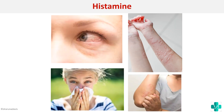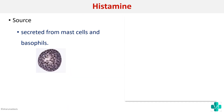Histamine is a very important mediator of allergy, and it is the main cause of all allergy symptoms. First, we'll write about the source of histamine — from where is histamine produced. It is produced from mast cells and basophils, specifically from the granules of mast cells and basophils.